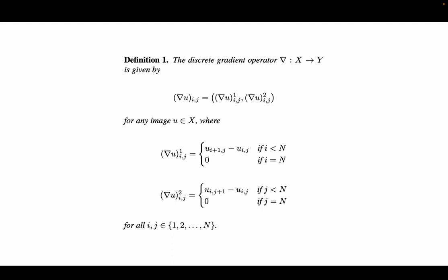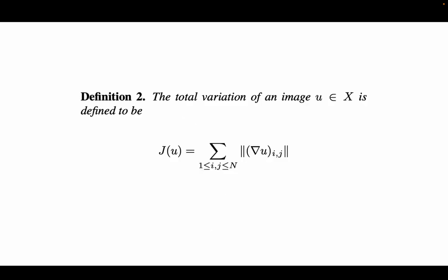So first we need to give a definition of the discrete gradient operator using his paper. And next we define what is total variation of an image u, which is simply the sum of the norm of its gradient at each point of the image.